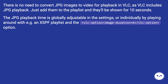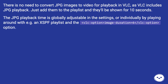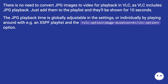There is no need to convert JPG images to video for playback in VLC, as VLC includes JPG playback. Just add them to the playlist and they'll be shown for 10 seconds each. The JPG playback time is globally adjustable in the settings, or individually by using a XSPF playlist with the image-duration option, for example image-duration equals 6.